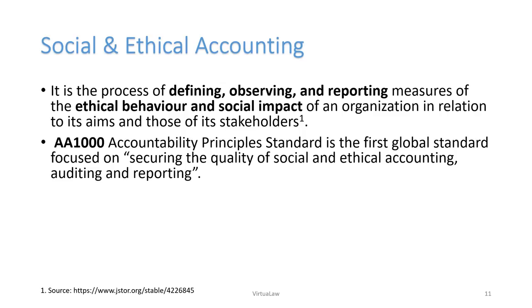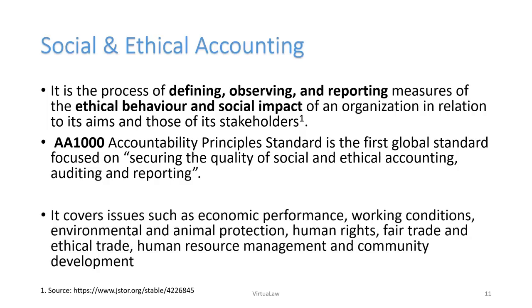AA1000 focuses on securing the quality of social and ethical accounting, auditing, and reporting. It covers issues like: economic performance of the company, working conditions, environmental measures, animal and wildlife protection, human rights protection, fair trade and fair competition, ethical trade in marketing and sales, HR management, and community development through corporate social responsibility initiatives. All these aspects are measured in terms of their social impact towards society.